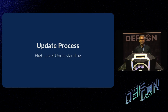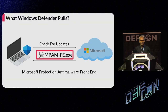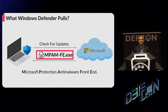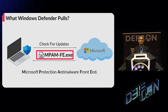Let's analyze the Defender update process and understand what happens locally during an update. Defender checks with the Microsoft Update Center for new updates. We found out that the updates are returned as a single executable. The file's full name is pretty long — it's called Microsoft Protection Anti-Malware Front End, so we will refer to it as MPAM from now on.